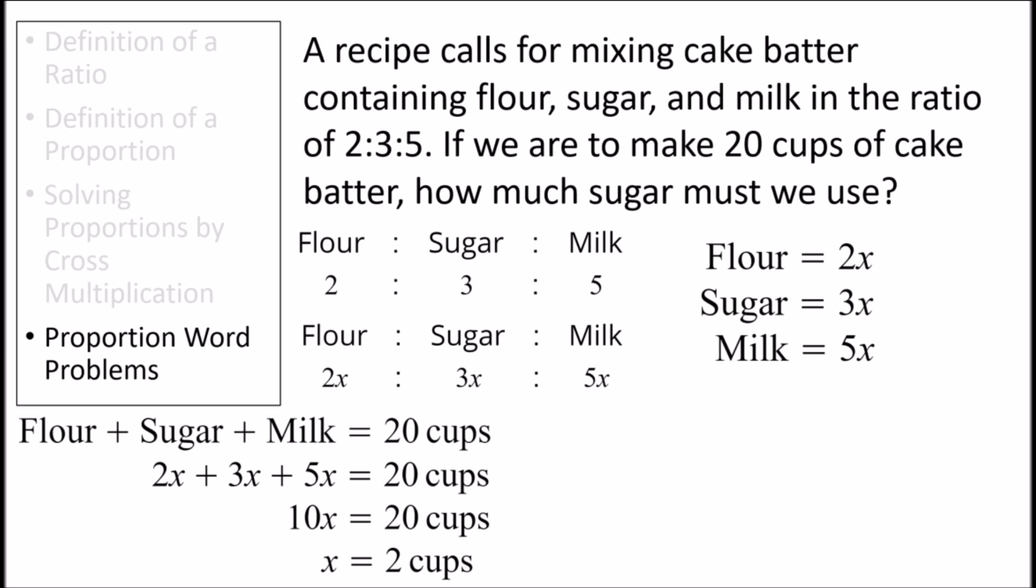Now, let's plug in x equals 2 cups into the equation for sugar to solve for the amount of sugar. Doing so gives us 6 cups of sugar. The key to this question was writing each variable as being equal to its ratio number multiplied by x, then using other information in the question to solve for x before solving for the amount of sugar that was used in the cake batter mix.